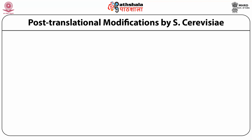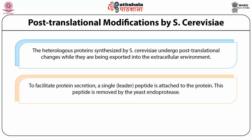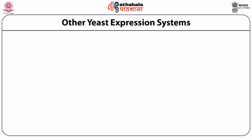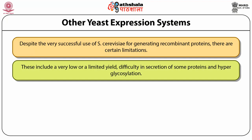Post-translational modifications by Saccharomyces cerevisiae: heterologous proteins synthesized by Saccharomyces cerevisiae undergo post-translational changes while being exported into the extracellular environment. To facilitate protein secretion, a signal peptide is attached to the protein, which is then removed by the yeast endoprotease. Despite the very successful use of Saccharomyces cerevisiae, there are certain limitations, including very low or limited yield, difficulty in secretion of some proteins, and hyperglycosylation.